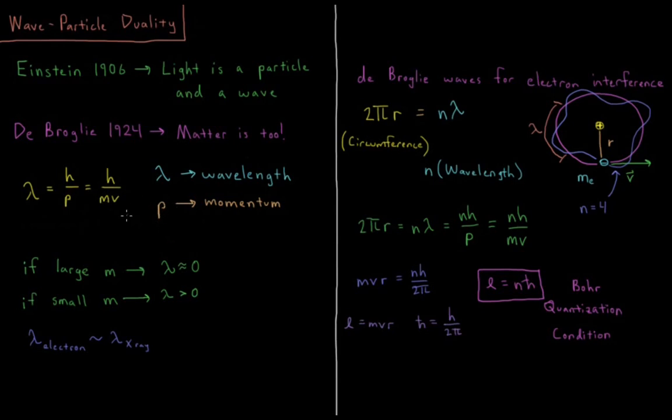What does this mean for the properties of particles, for regular matter particles? If they have a large mass, then this mass is going to be very big. This momentum is going to be very big compared to Planck's constant.